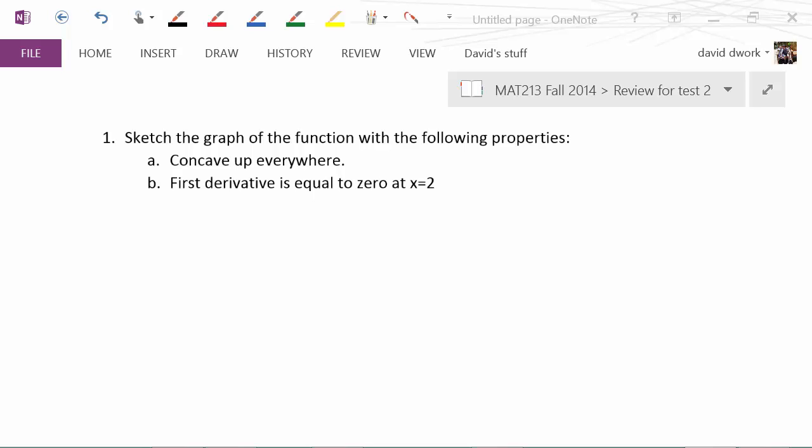Okay, so this problem is asking us to sketch the graph of a function with the following properties. The key thing to understand about these problems is we're just sketching, it doesn't need to be perfect. And the next thing is that there's infinitely many solutions, so you just have to get a little creative.